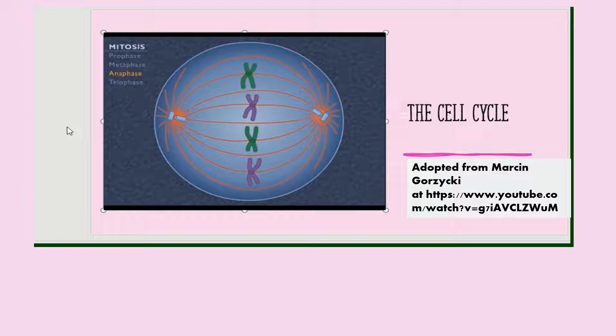Anaphase begins when the sister chromatids of each chromosome begin to separate. The centromere that holds sister chromatids together divides and the chromosomes move away from each other along its spindle fiber.